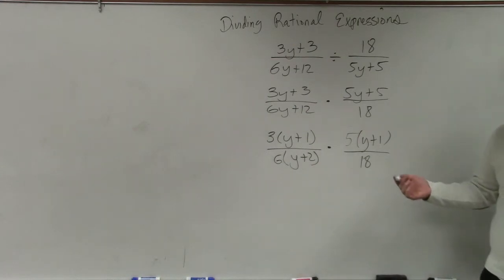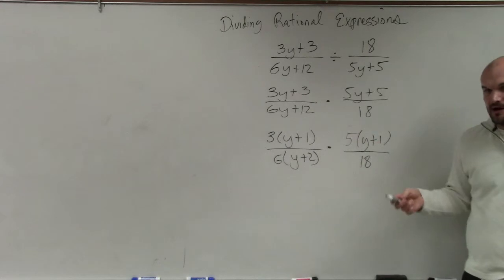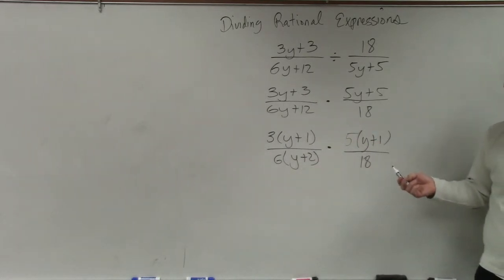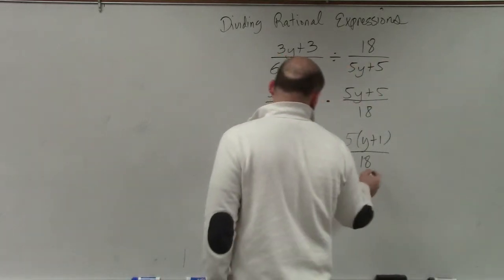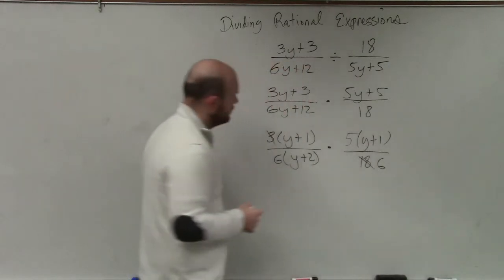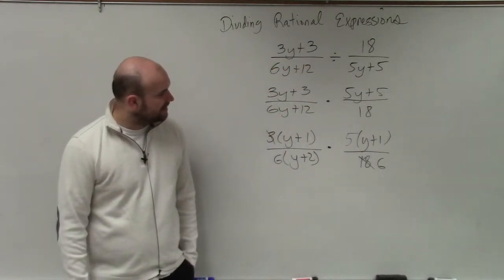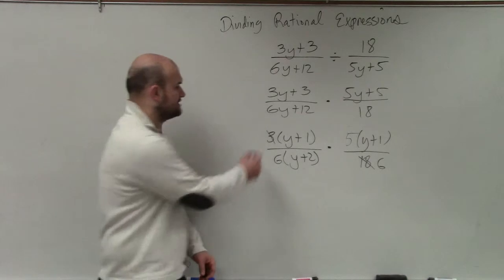And now we look at this. Now, obviously, ladies and gentlemen, if we had common elements, we would be able to divide them out, right? Does this have anything we can divide out? I can simplify the 3 over the 18, right? So I simplify 3 over 18 as divide 3 in the top and the bottom, and I get 1 sixth.